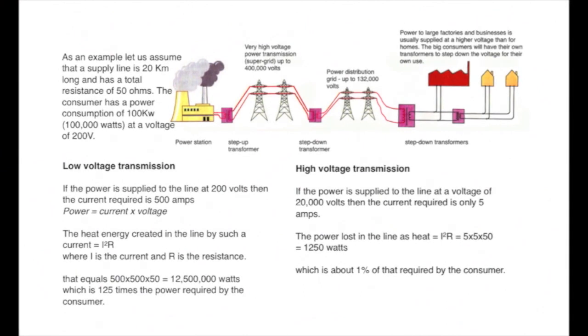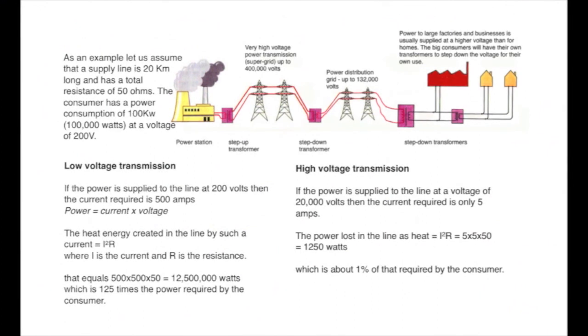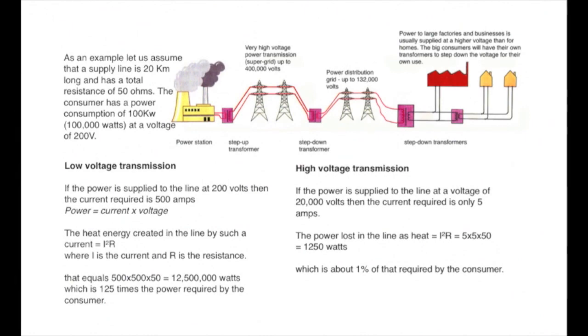If we did not use alternating current, together with transformers, all consumers would have to be within a mile or two of a power station, and that clearly is not feasible for an electricity supply industry. Thank you for watching.